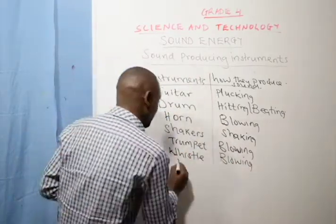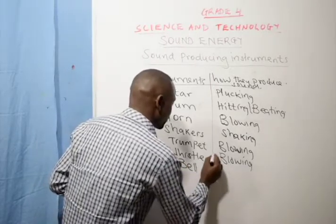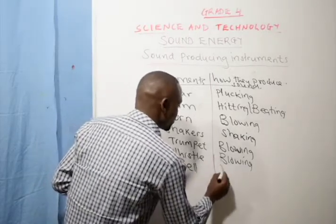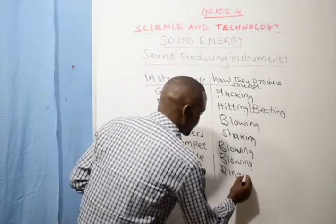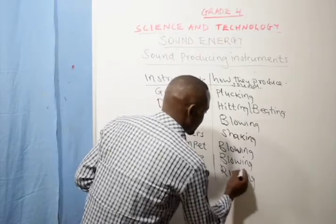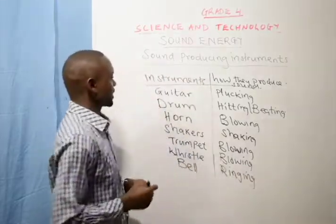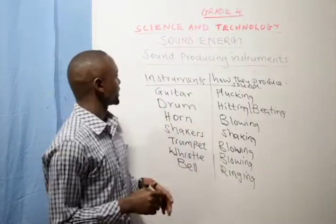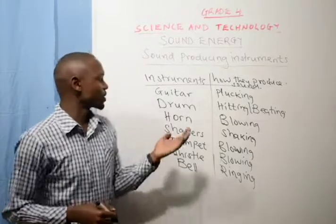Then lastly we have the one we use at school — a bell will produce sound through ringing. So these are some of the examples of instruments that we know.